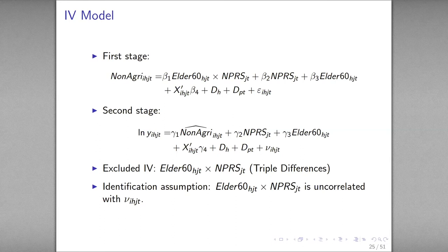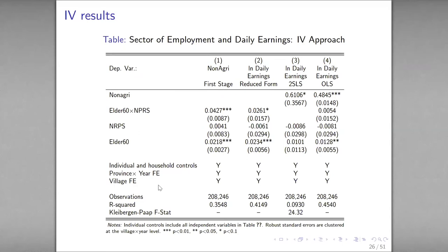Here is our IV specification — we use a triple difference specification. The instrument is the interaction of whether the household has an elderly member aged 60 or above and whether the county has the New Rural Pension Scheme. The intuition is that the NRPS would only affect migration costs for households with an elderly aged 60 or above. The first-stage estimate shows that the NRPS leads to a 4 percentage point increase in the chance of working in the non-agricultural sector for individuals with an elderly in the household. The two-stage least squares estimate is 61%.